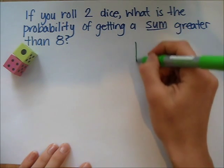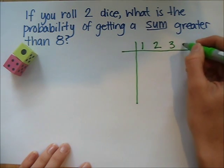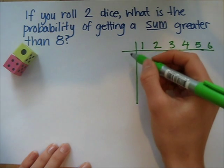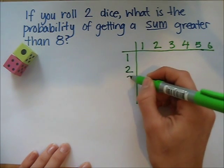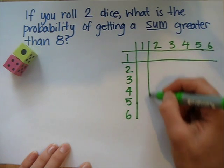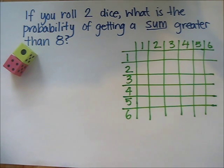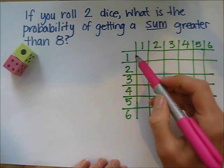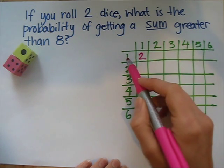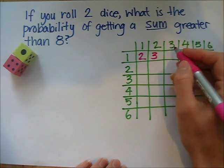We've got two dice — these are our two events. Along the top of the sample space diagram we write all the possible outcomes of the first dice, and along the side we list all the possible outcomes of the second dice. You can get the numbers one to six on both dice. In each square I write the total — for example, a one on the first dice and a one on the second gives a total of two; a one and a two gives three, and so on. We fill in the whole sample space diagram.